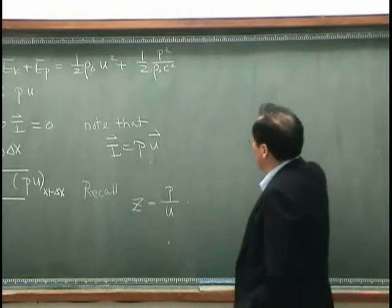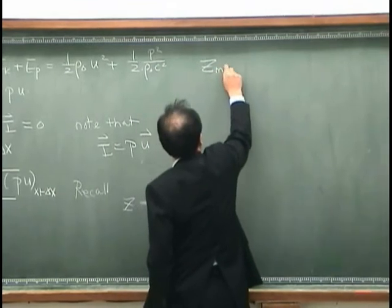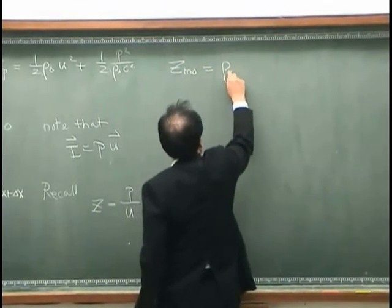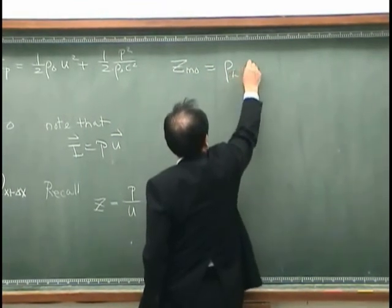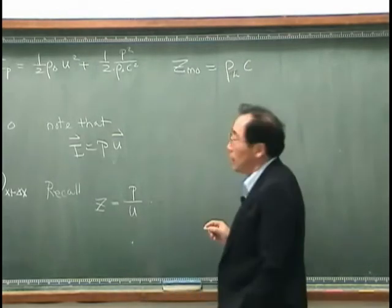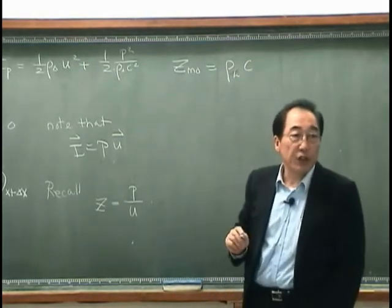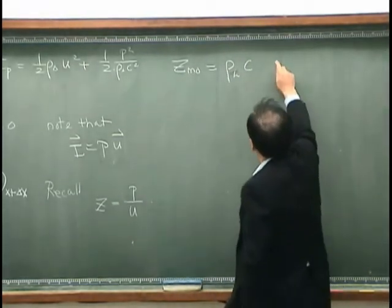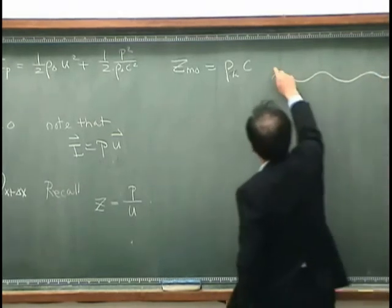So when we look at driving point impedance for the string, for infinite string, driving point impedance is like that.